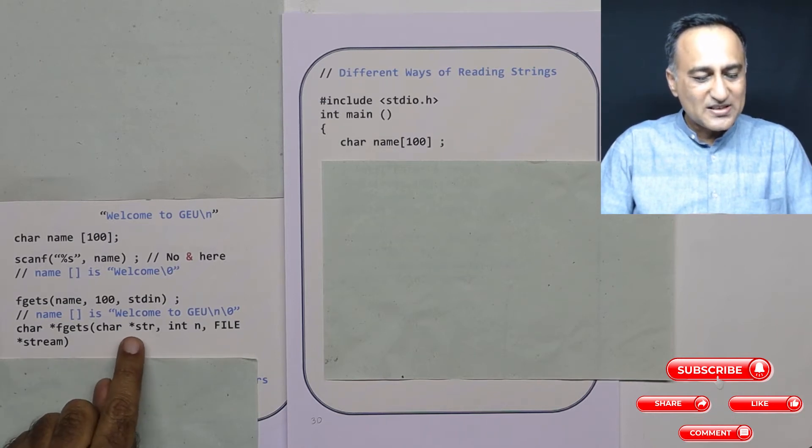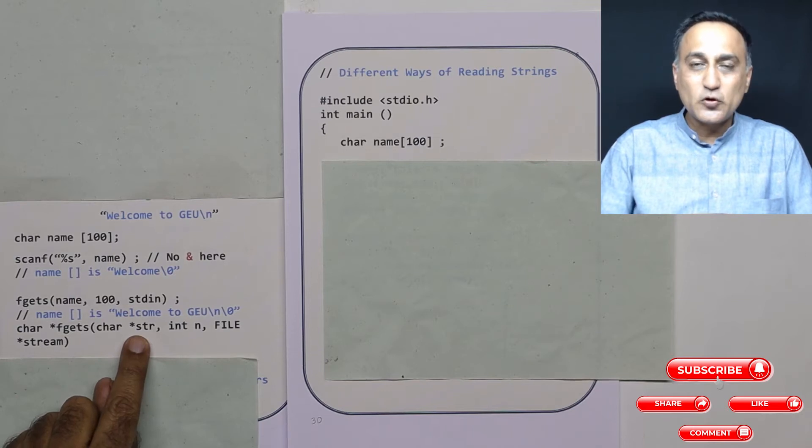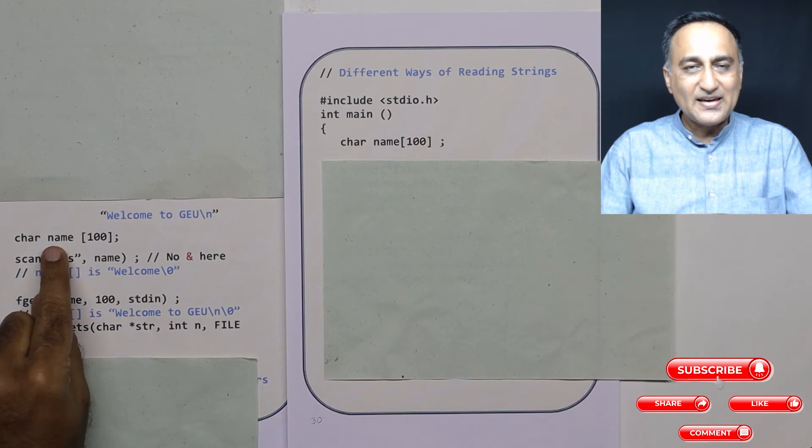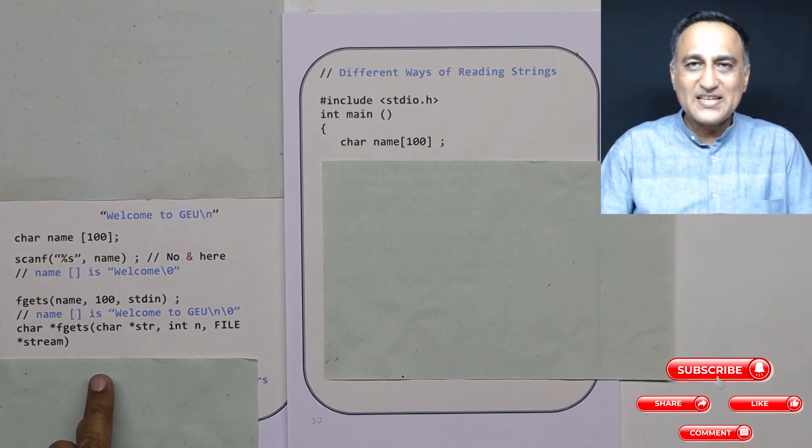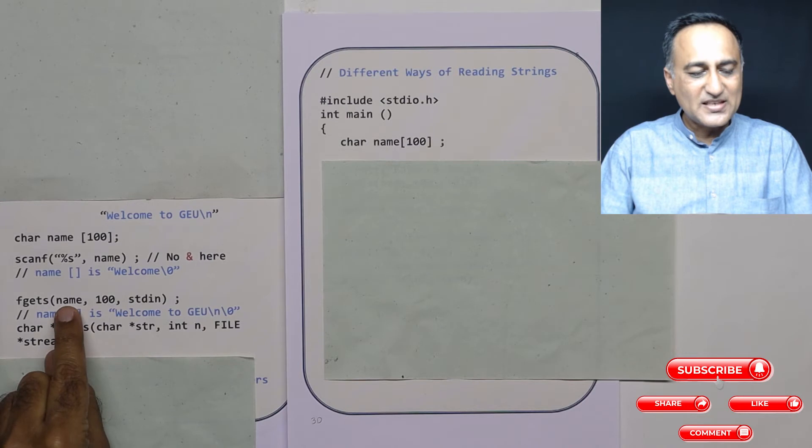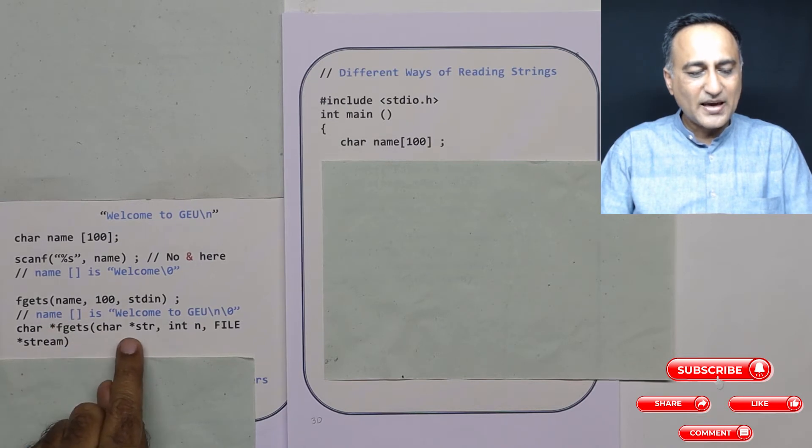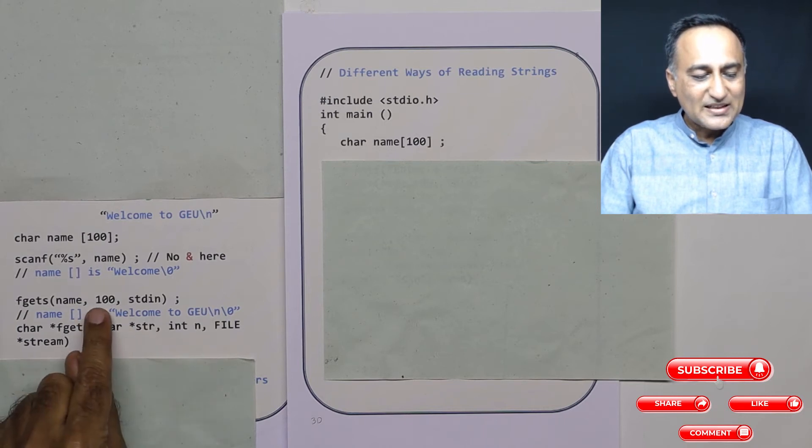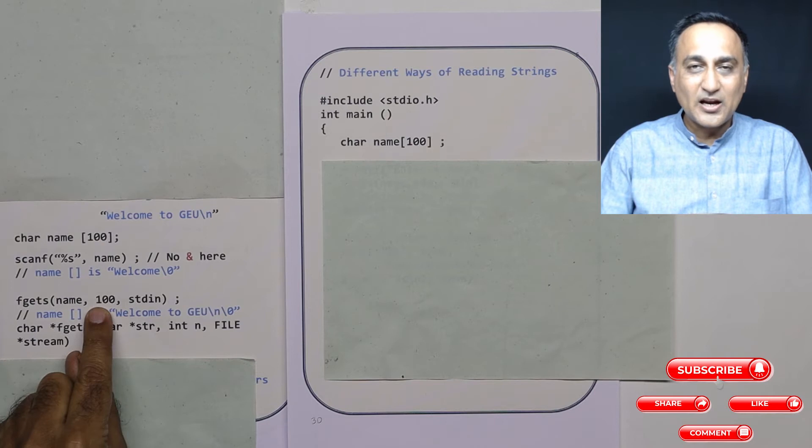What fgets tells me is the first parameter should be a pointer to a character. Now you know that an array name is an address, so it is a constant type of pointer. That's why this first parameter, if I am sending name here, this indicates that name is a character or a constant pointer.